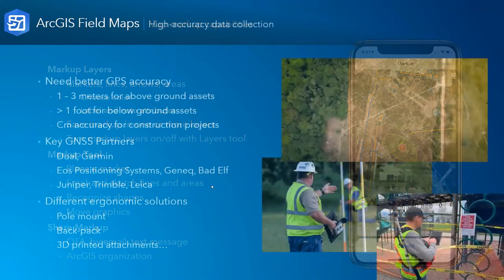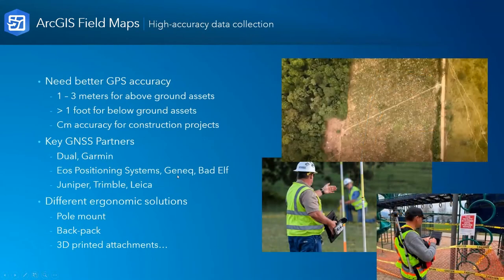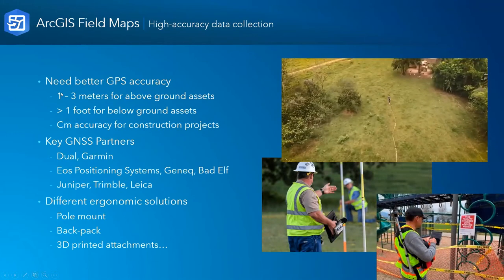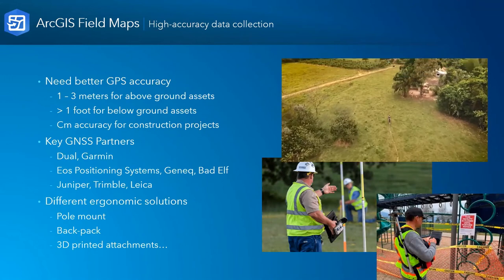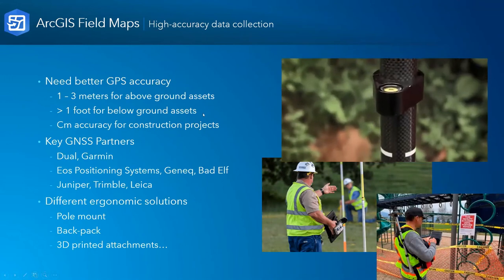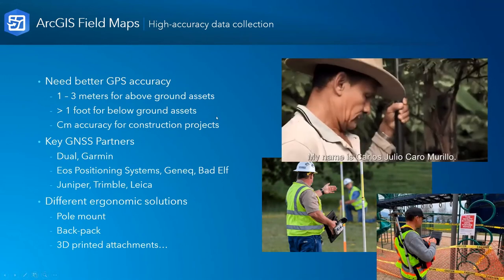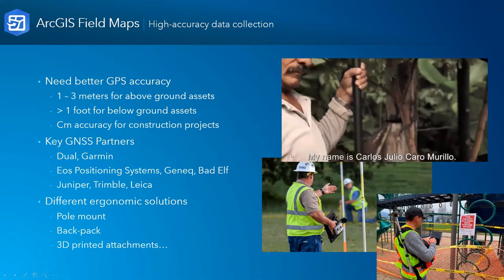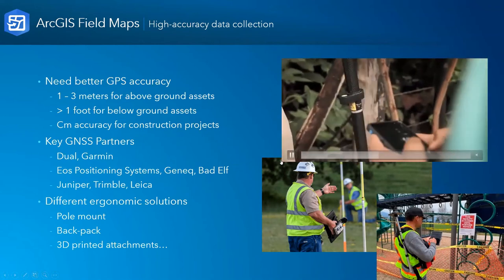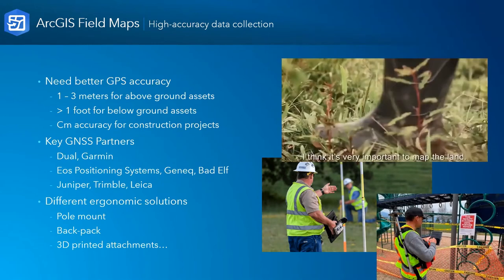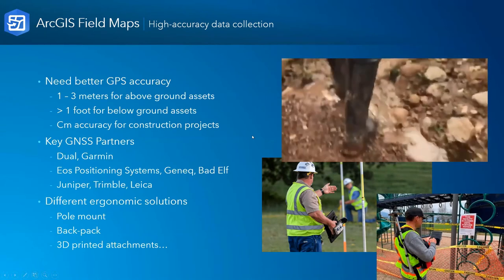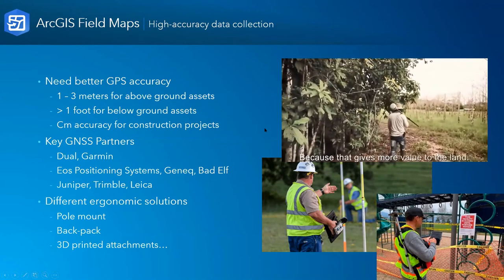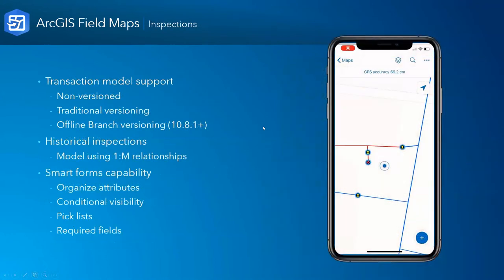High accuracy data collection: it supports everything you're used to doing inside ArcGIS Collector. There are GNSS partners we've worked with — Dual, Garmin, and others on the list. The point is it's all supported — what you're used to seeing in Collector is there too.